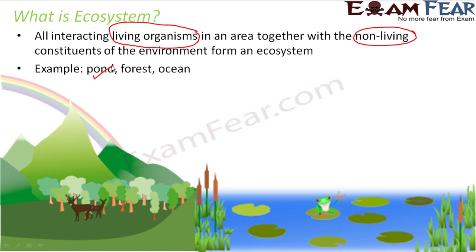There are other ecosystems as well. A forest, for example — inside the forest you have so many plants and trees, many different varieties of animals from big ones like lions, tigers, and elephants, to small insects and birds. You also have non-living components like water, soil, hills, and air. Without non-living components, the wildlife in a forest could not exist. So pond, forest, and ocean are all examples of ecosystems. In the ocean too, you have a variety of life — whales, sharks, crabs, shells — along with water as the non-living component.